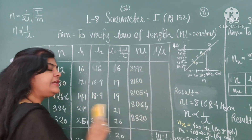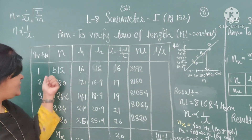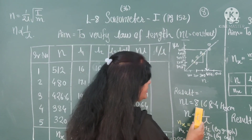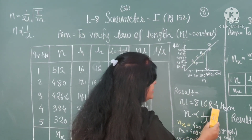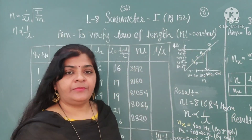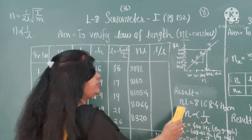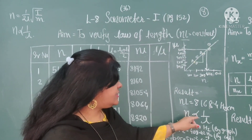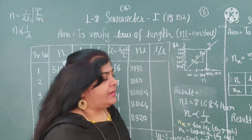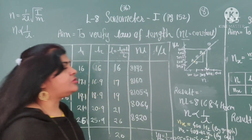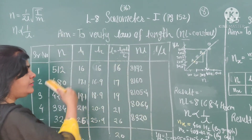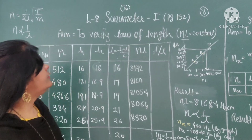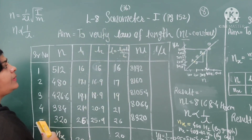Write the mean value: mean means addition of all readings divided by 5 — since there are 5 observations — giving the result as NL equals 8168.4. Write the unit as hertz centimeter. The NL value is calculated and this shows NL is constant, meaning frequency is inversely proportional to the vibrating length. Write one sentence: this is the first law of vibrating strings. In this way, complete the observation table, calculation, log calculation, and write the result.